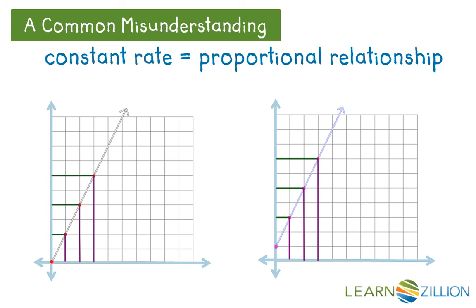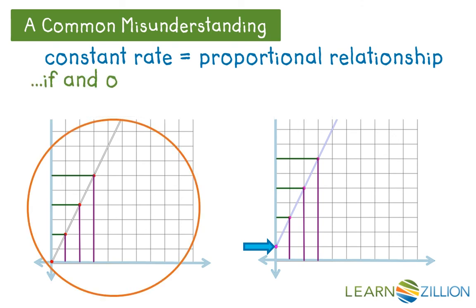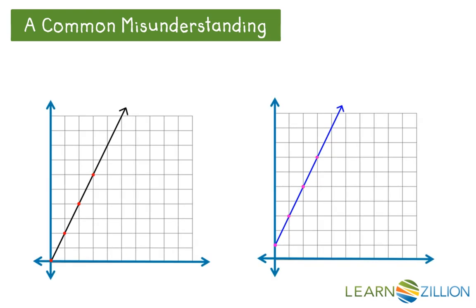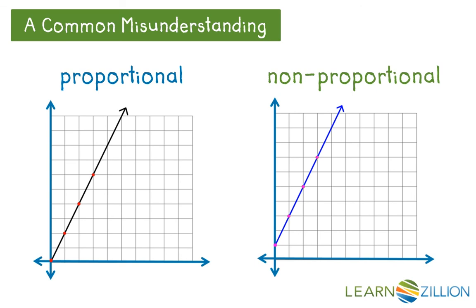One thing that will clue you in on when there's not a proportional relationship is where the line begins. If it doesn't begin at the origin — such that x equals 0 and y equals 0 — then we don't have a proportional relationship. So when you see a constant rate, there is a proportional relationship if and only if the line begins at the origin, such that when x equals 0, y also equals 0. The line on the left is a proportional relationship, but the line on the right is called non-proportional.